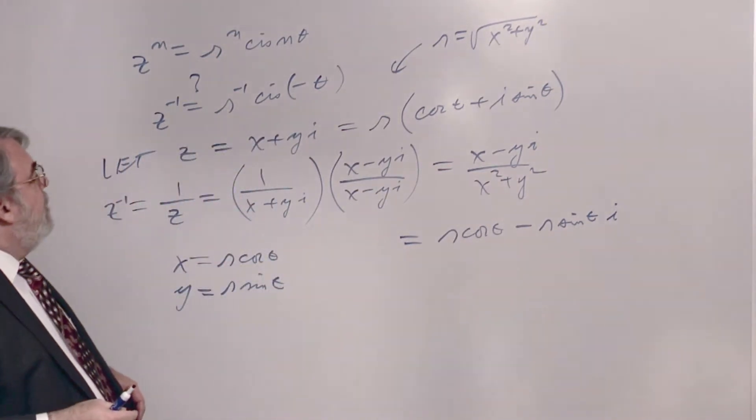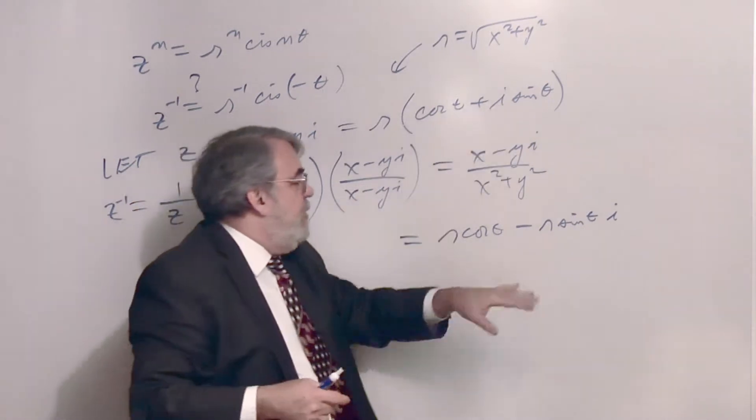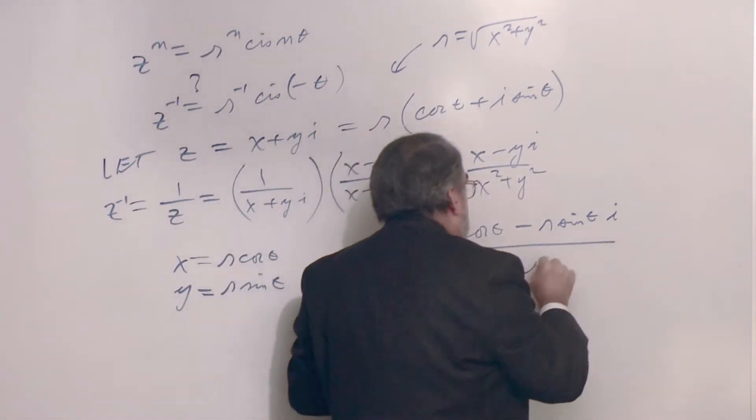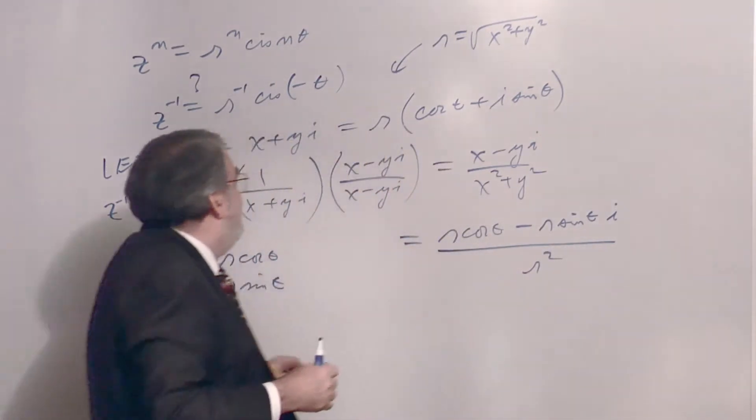Alright. So, it's very similar to this if I multiply the r through there except I have a minus sign. And the denominator is simply r squared, isn't it? That's r squared.